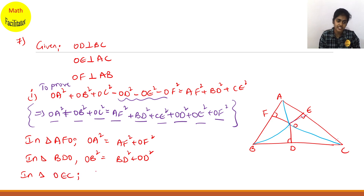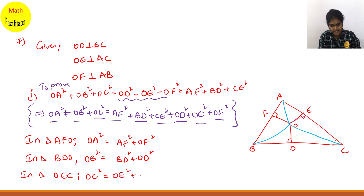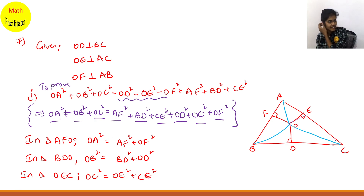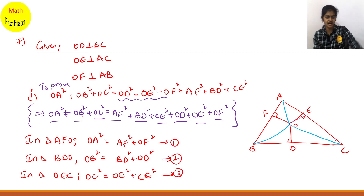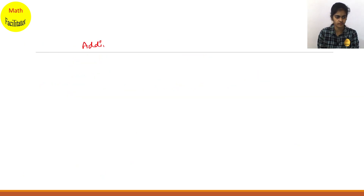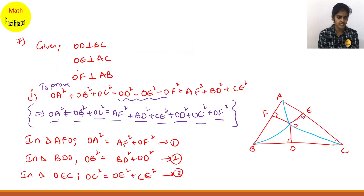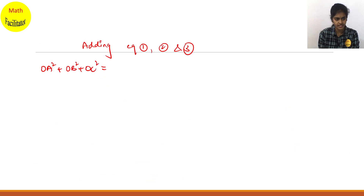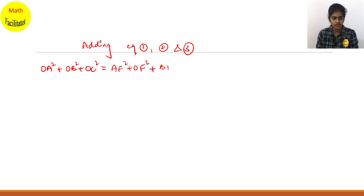In triangle OEC: OC square equals OE square plus CE square. To know which triangles to take, firstly simplify in rough work and then take the triangles. Adding equations 1, 2 and 3: OA square plus OB square plus OC square equals AF square plus OF square plus BD square plus OD square plus OE square plus CE square.